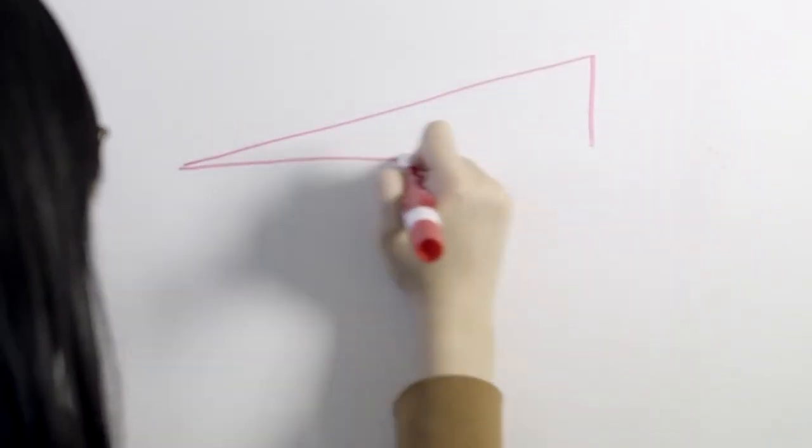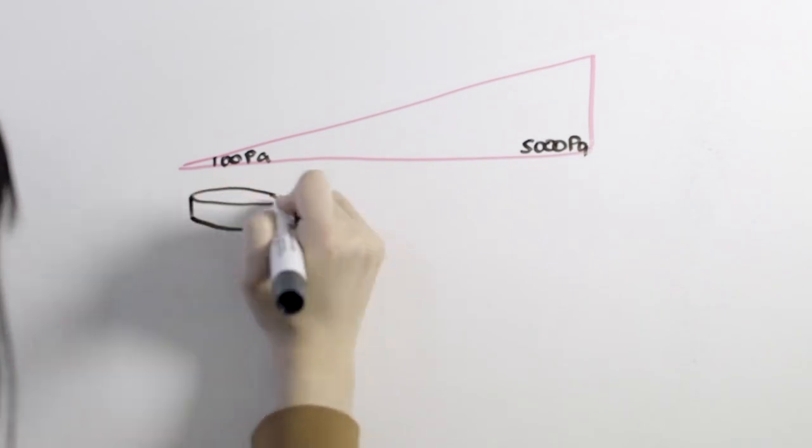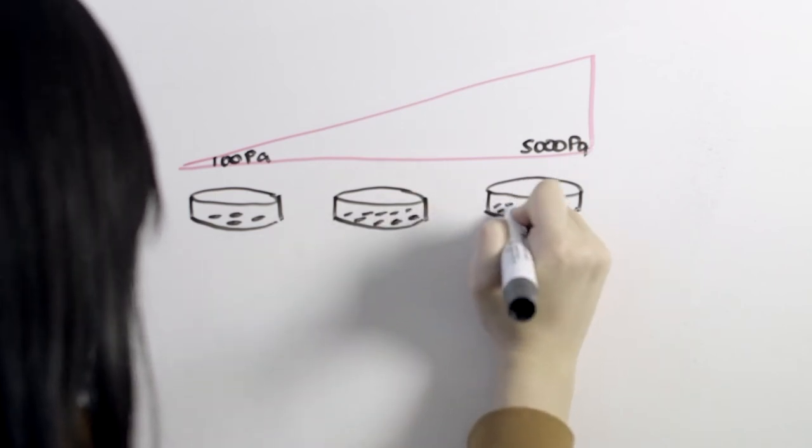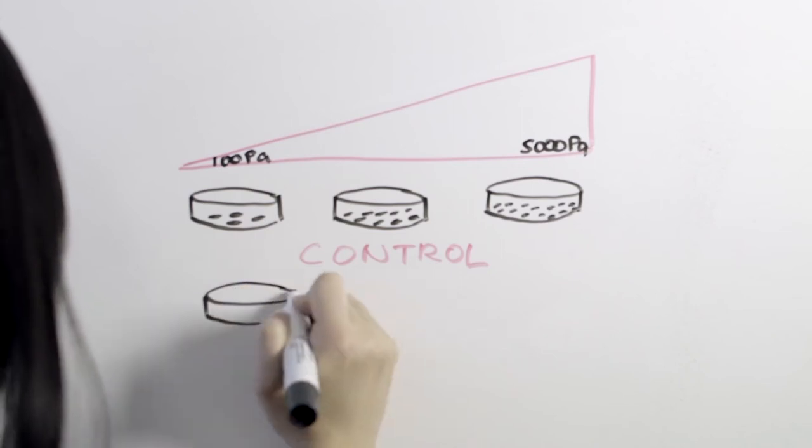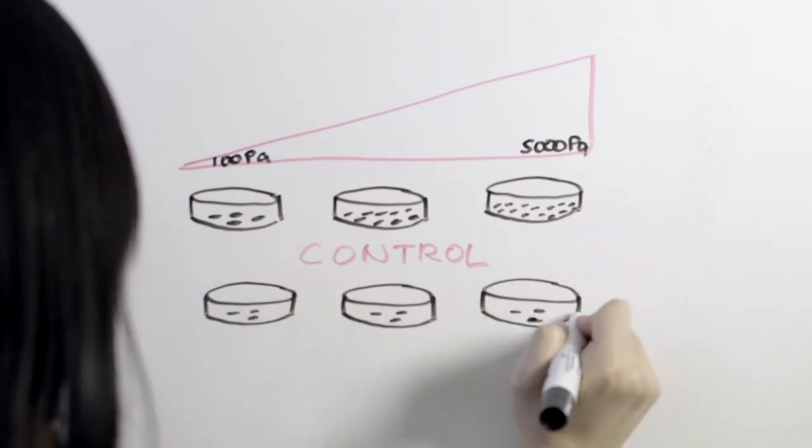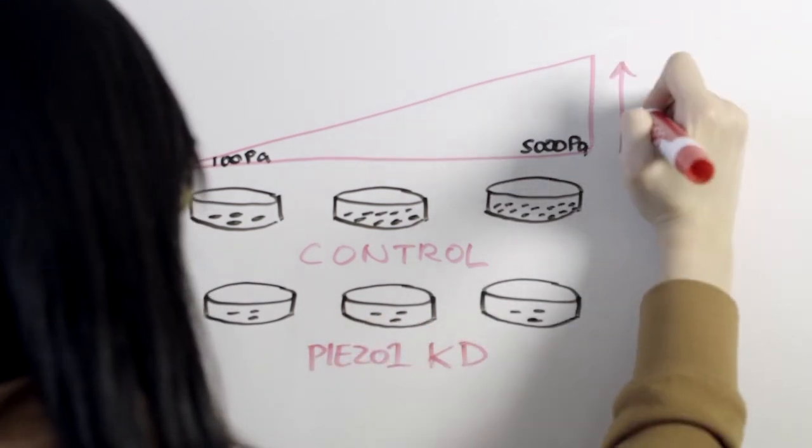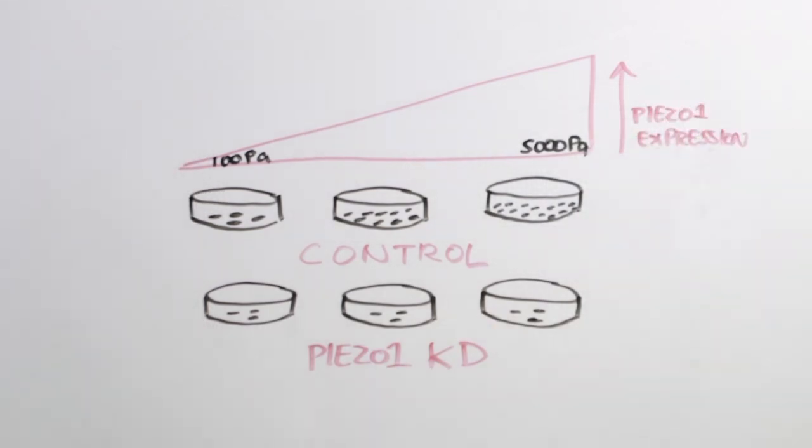We then cultured GBM stem cells in polyacrylamide hydrogels of various levels of stiffness, which encompass the stiffness range from normal human brain to glioma. The number of GBM stem cells undergoing activated cell cycling as well as the total number of cells increased with stiffness. However, PIEZO1 knockdown ablated this stiffness-dependent tumor cell growth. Unexpectedly, we also found PIEZO1 expression was upregulated by the increased environmental stiffness.